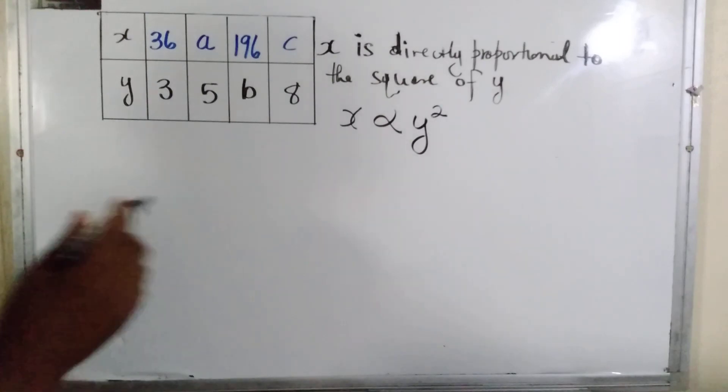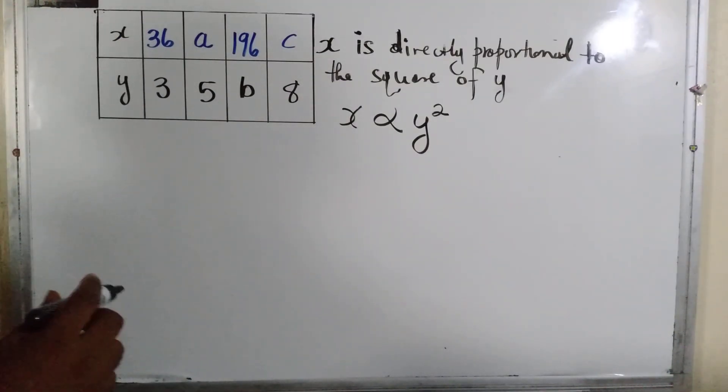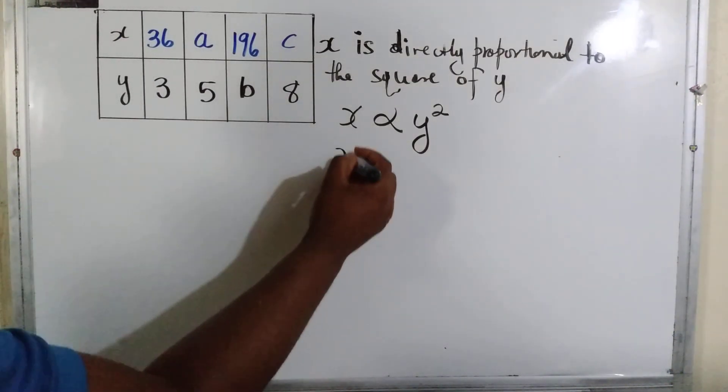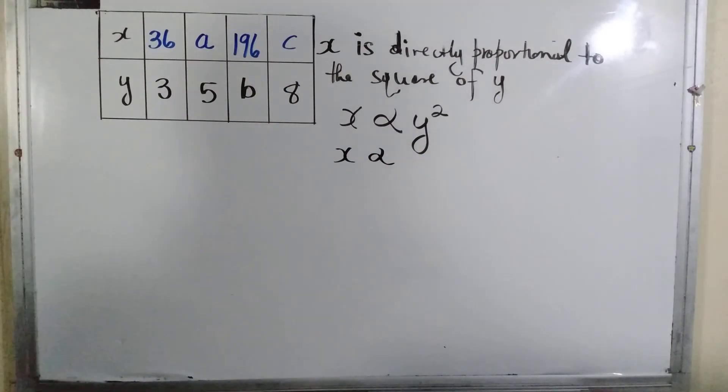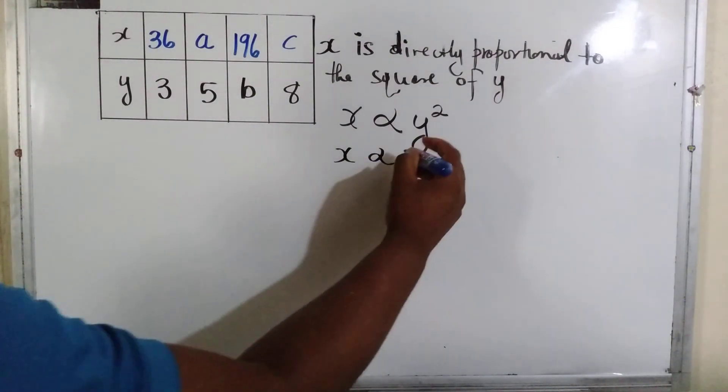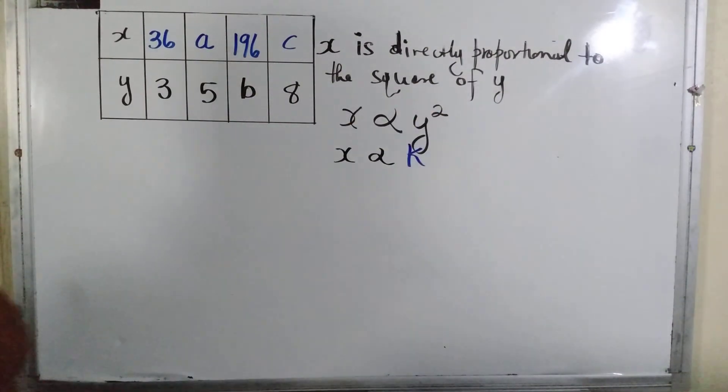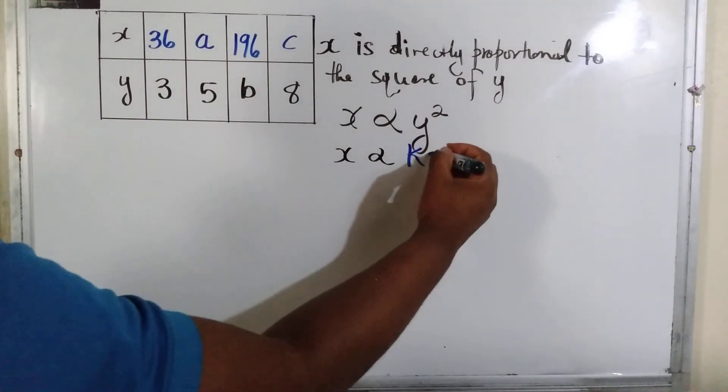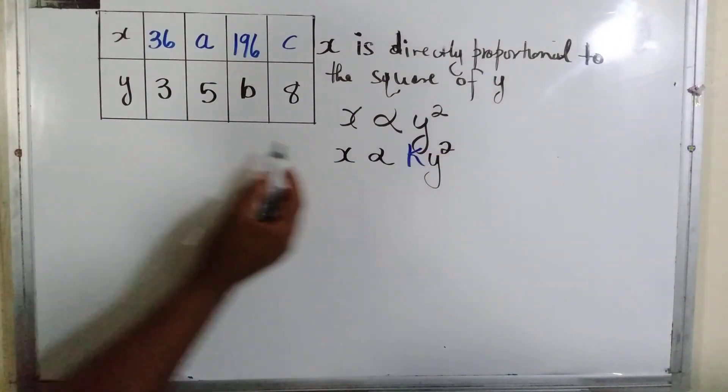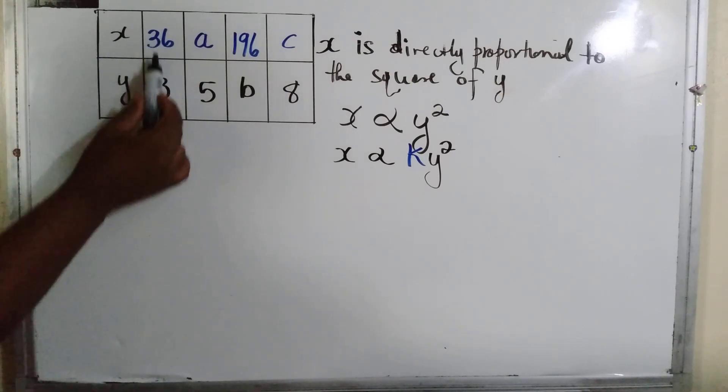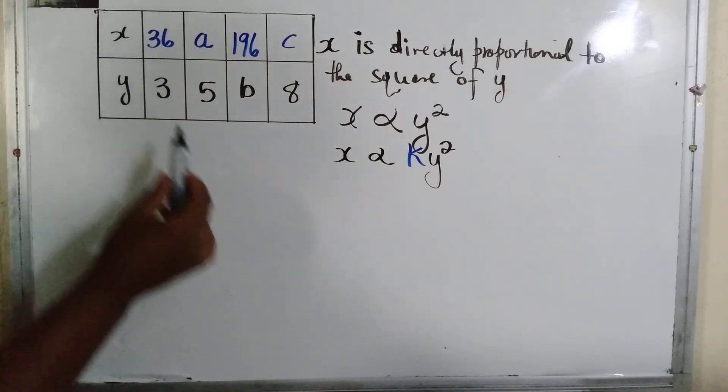Remember, we are searching for some constant k. To get that, we put k right here and then we have y squared. We use the information that is given, so we're given 36 and 3.